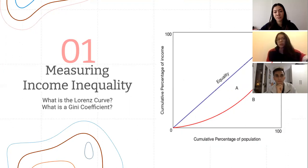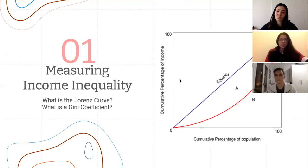The Lorenz curve plots the cumulative percentage of total income received against the cumulative number of recipients of population, starting with the individuals with the lowest income. The use of both the Gini coefficient and the Lorenz curve will give us a clearer understanding of a country's inequality.